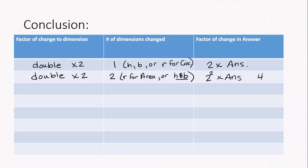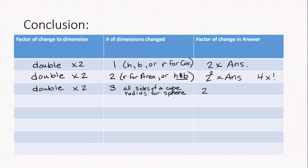What if we double three dimensions? That applies to volume, since volume always has three dimensions. Doubling all three sides of a cube, or the radius of a sphere, means multiplying by 2 three times: 2 × 2 × 2 = 8. So the volume becomes eight times bigger when you double all the dimensions.